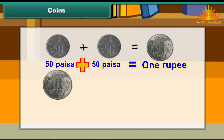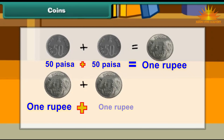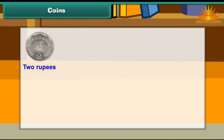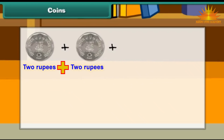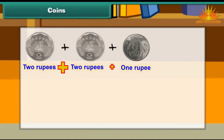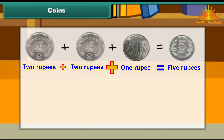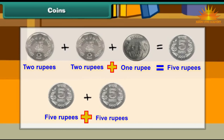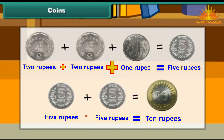2 one rupee coins make 2 rupees. 2 two rupee coins and 1 one rupee coin make 5 rupees. 2 five rupee coins make 10 rupees.